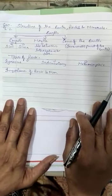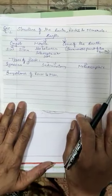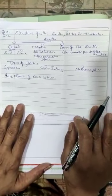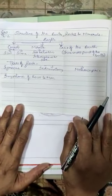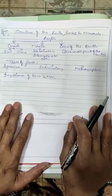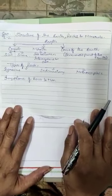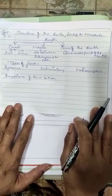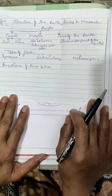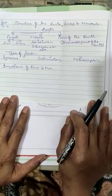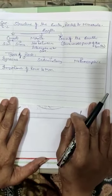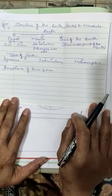After these points, we will see the types of rock. The types of rocks are Igneous Rocks, Sedimentary Rocks, and Metamorphic Rocks. After the 3 types of rocks, we will give a brief note on the importance of rocks to man.